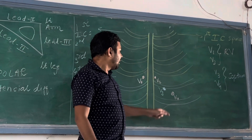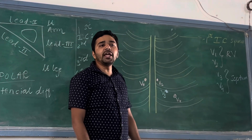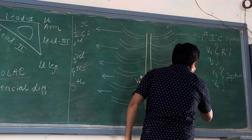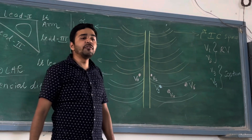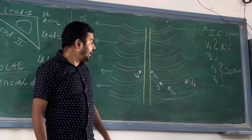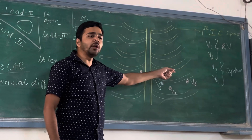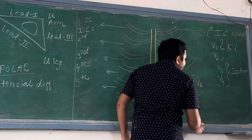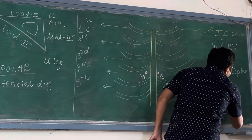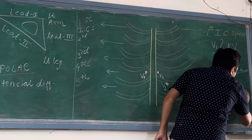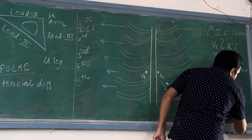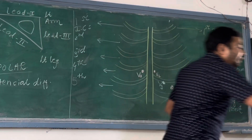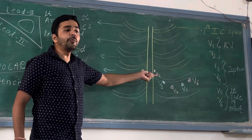V6 will be placed on the mid-axillary line in the fifth intercostal space. V5 is placed between V4 and V6. V5 and V6 will give the idea about the left side of the heart, mainly the left ventricle.